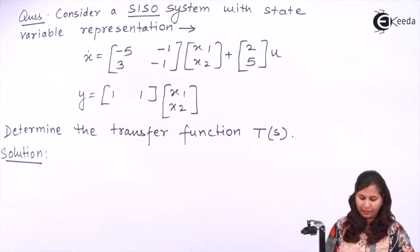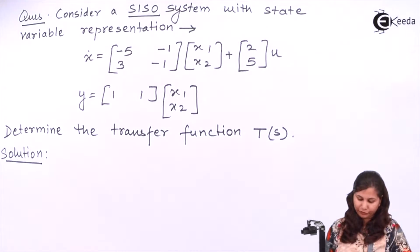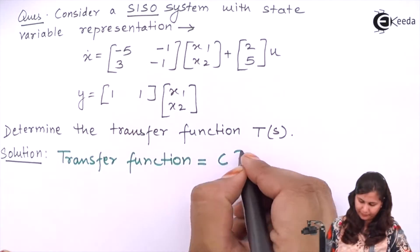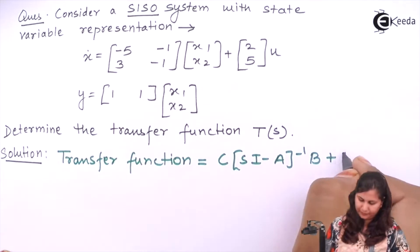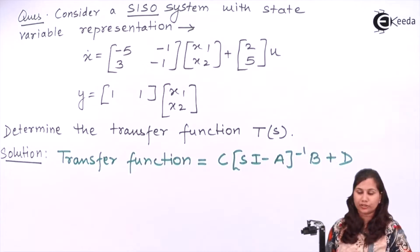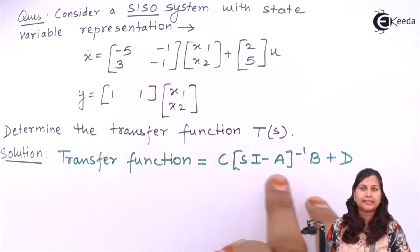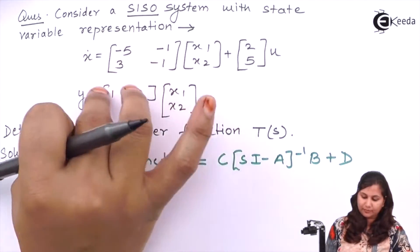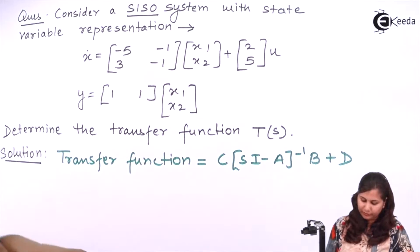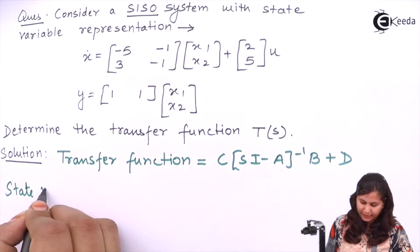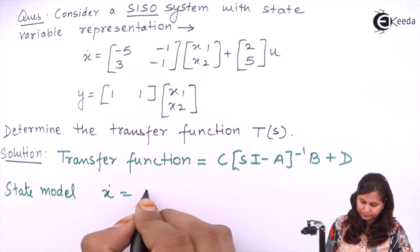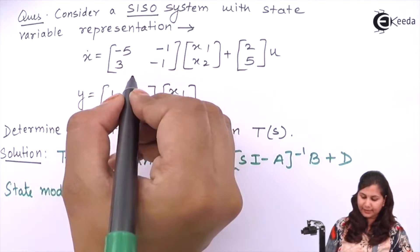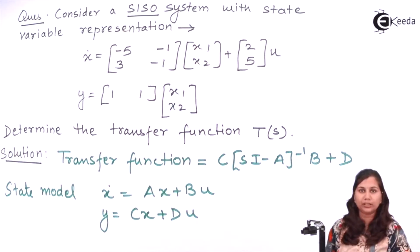Now we know that the transfer function is given by the formula where A, B, C, and D are the matrices from the state model representation. Now if we compare this state model with the general state model, which is given by the two state space equations — these are the two state space equations — and this state variable representation has been given to us for the system.